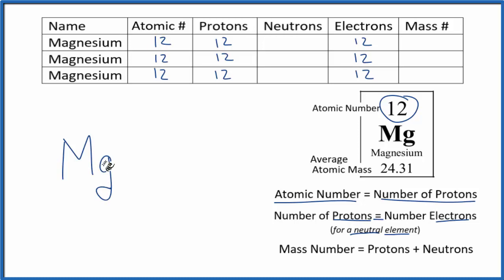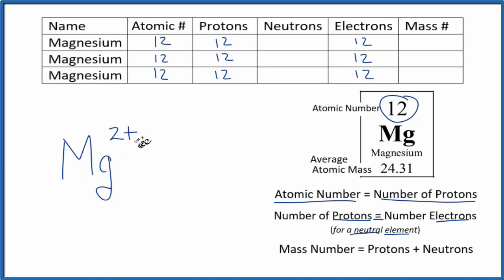But if you have something like Mg 2+ that's an ion, so this is not a neutral compound — it has a 2+ charge. On the periodic table we're dealing just with neutral elements.